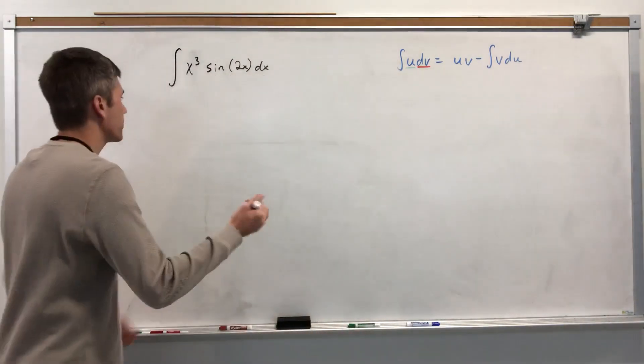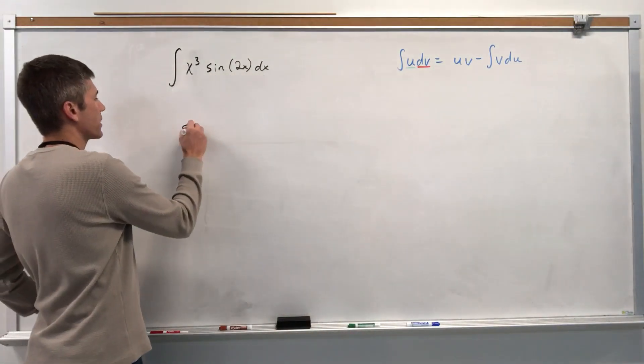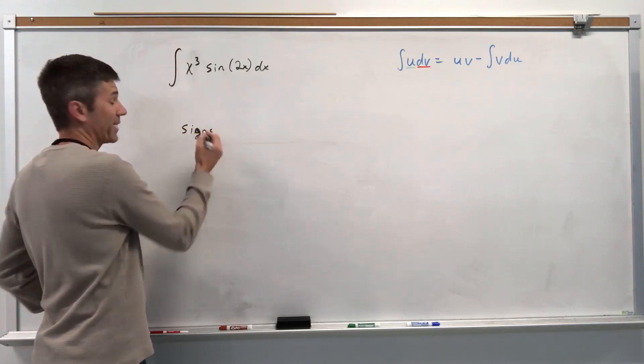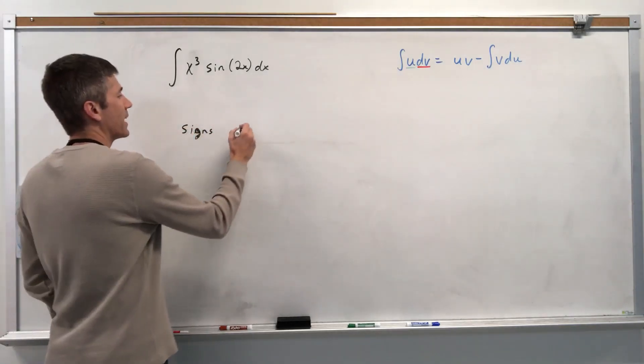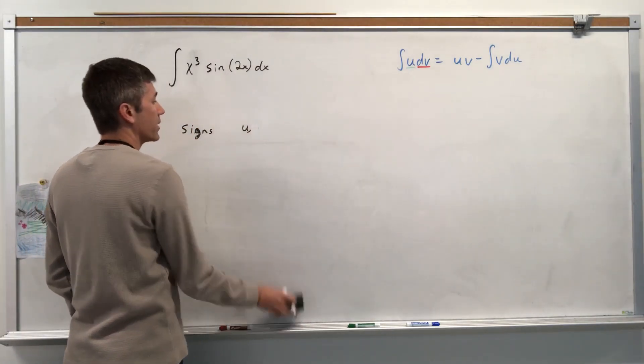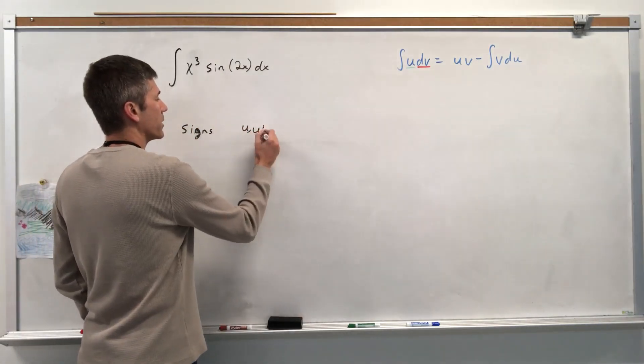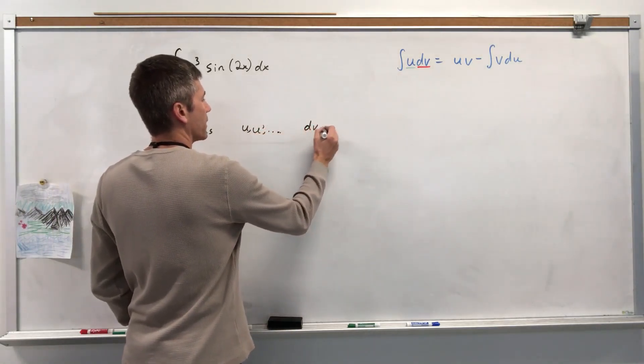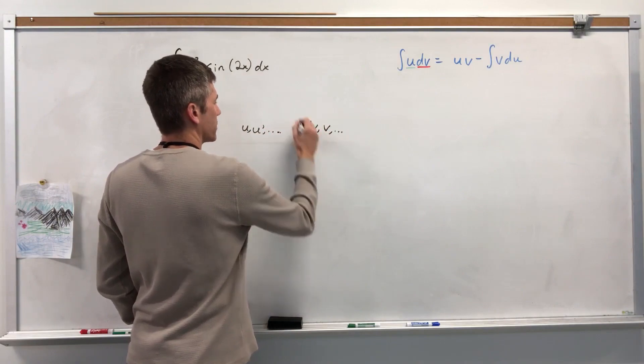So second time using the table, and we have three columns. Sines, I almost put sings. Then I have to sing the rest of the problem. We're going to have u and then the derivative of u, and then we keep going with that. Then we're going to have dv and the integral of that, which would be v, and then we keep going with that idea.